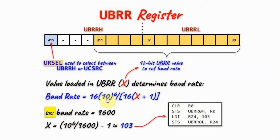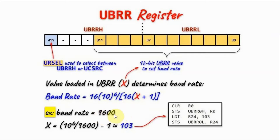This is the equation used to calculate the baud rate given the system clock frequency of 16 MHz, where X is the 12-bit value. So for a baud rate of 9600, the value of X is approximately 103.